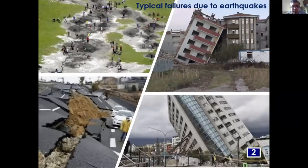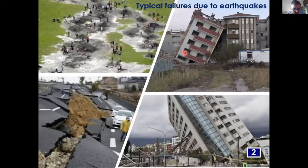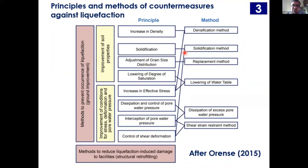There are many countermeasures against liquefaction. To counter the occurrence of liquefaction, you need to do ground improvement. Methods include: increasing density, solidification, adjusting grain size distribution, lowering the degree of saturation below the foundation by pumping air, and replacement methods like vibroflotation — replacing soil with stones and densifying surrounding soil. Our principle relates to densification methods. There are also methods like dissipation of excess pore water pressure and control of pore water pressure.